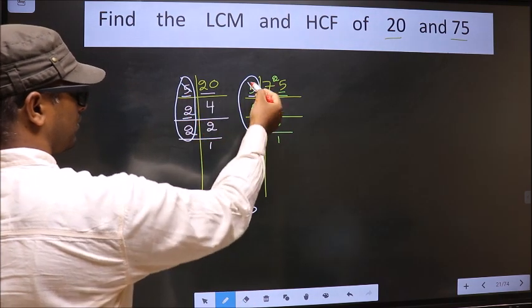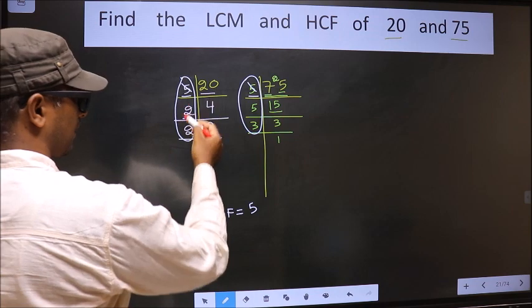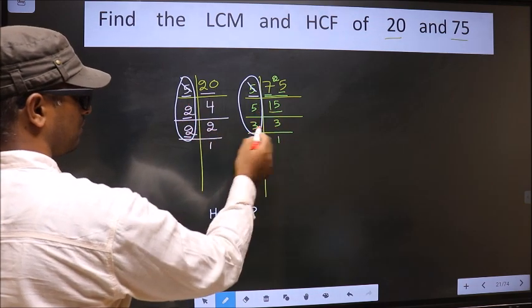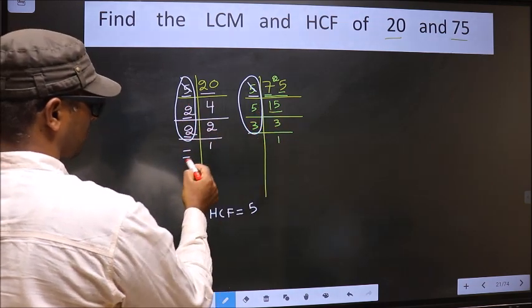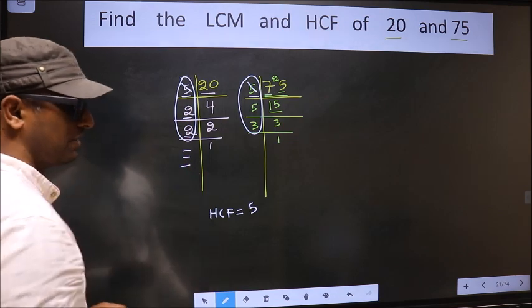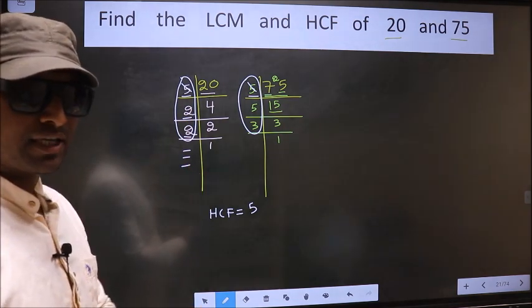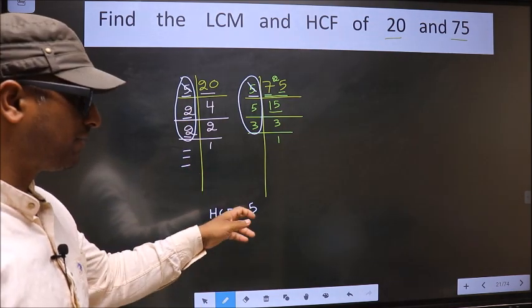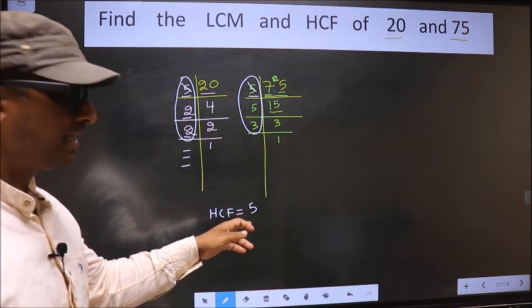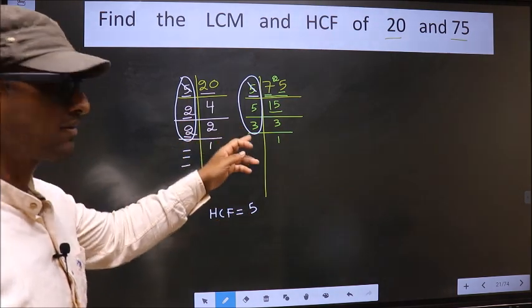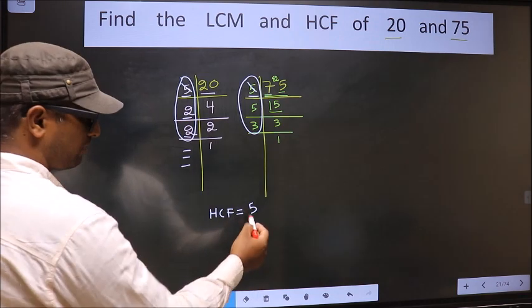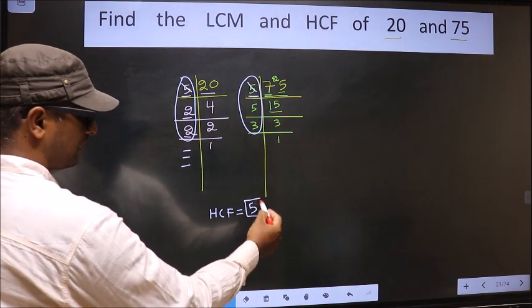Next number, 2 - do we have 2 here? No. Next number, 2 - do we have 2 here? No. No more numbers are left. Therefore, we got only one number, 5, present in both places. So 5 itself is our HCF.